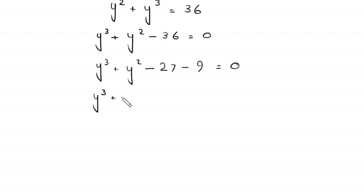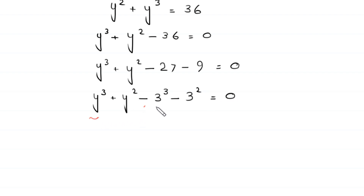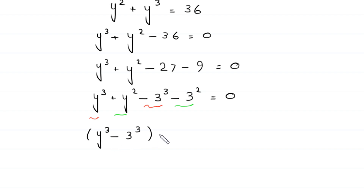We note that 36 equals 27 plus 9, which is 3 cubed plus 3 squared. So the equation becomes y cubed plus y squared minus 3 cubed minus 3 squared equals zero. We group the terms: (y cubed minus 3 cubed) and (y squared minus 3 squared) equals zero.